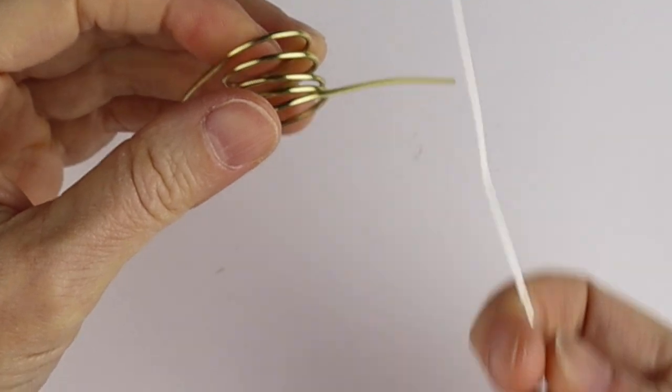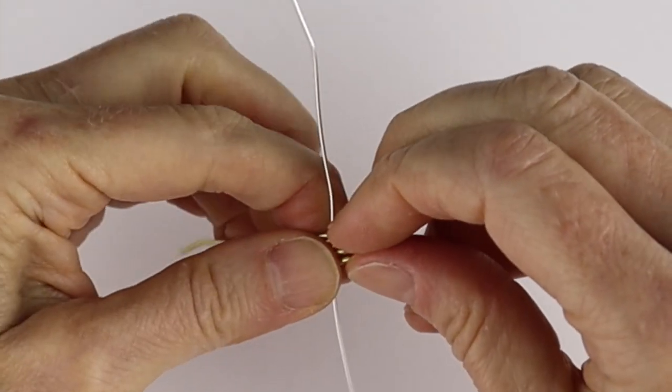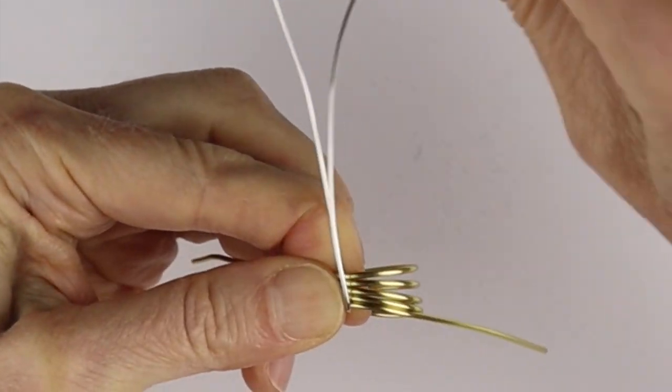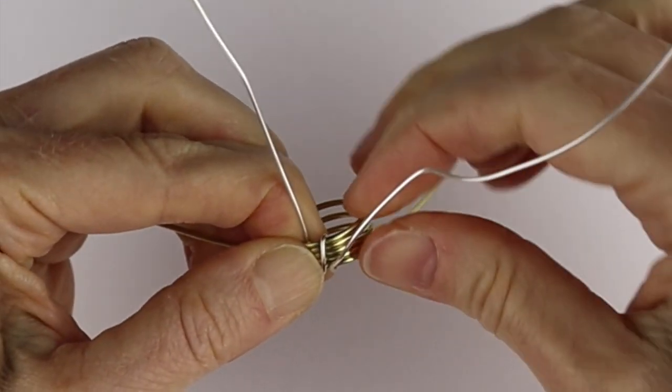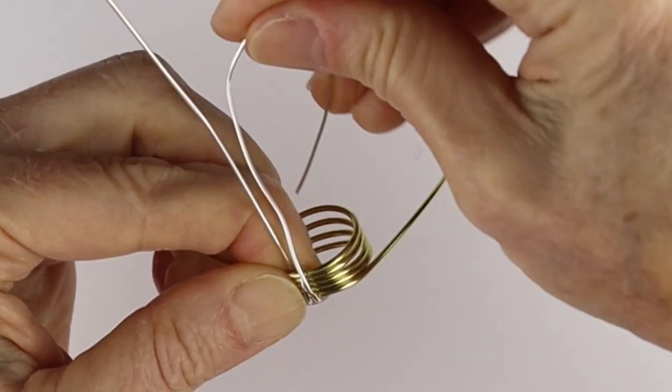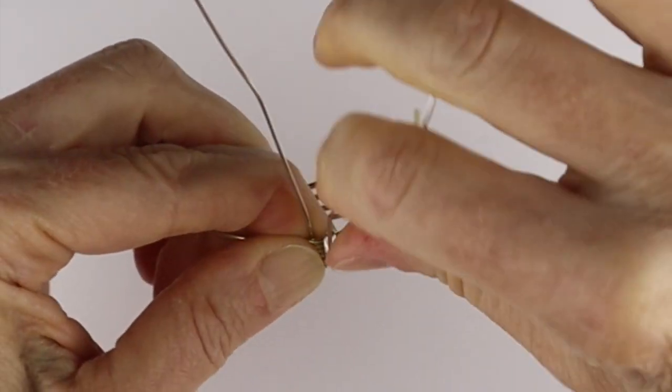Now we can take some 20 gauge wire. You could use 18 if you want as well, depends on how chunky you want it. Hold these together and then just wind this around. You want to make sure these wires stay one beside the other. Then we're just going to keep winding this one around however many times that you want.